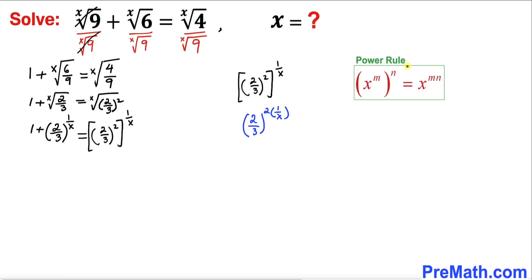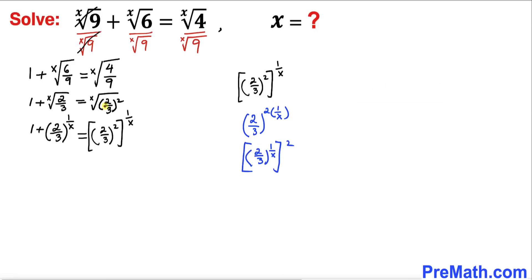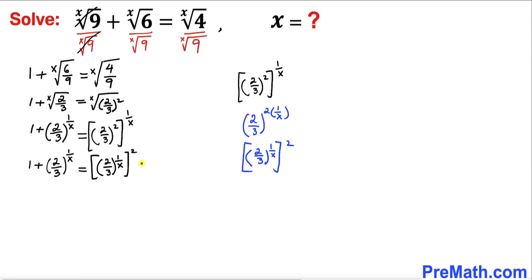Applying the power rule once again, the right-hand side can be rewritten as (2/3)^(1/x) whole squared. So we replace that part of the equation with this equivalent form.